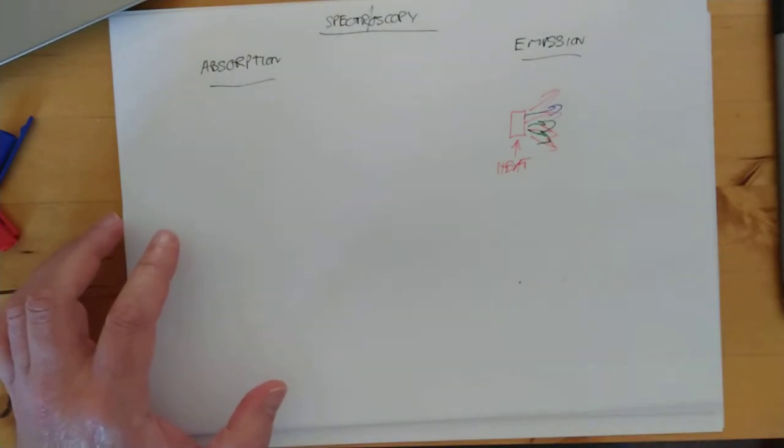And if we analyse that light, then we can tell, we get a spectrum that looks a bit like this. A typical emission spectrum.